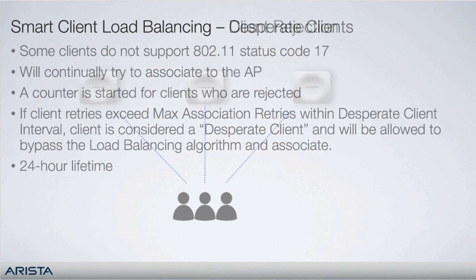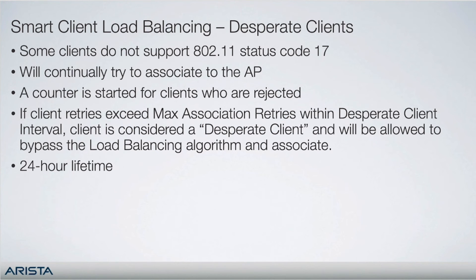Some clients do not support 802.11 status code 17 and will instead continually try to associate with an AP that is refusing additional connections. In this case, rather than never allowing the client to connect, a counter is started and if the number of retries exceeds the configured max association retries within a time period called the desperate client interval, the client is considered a desperate client and will be allowed to bypass the smart client load balancing algorithm and associate. This status will be maintained for 24 hours before requiring reevaluation.